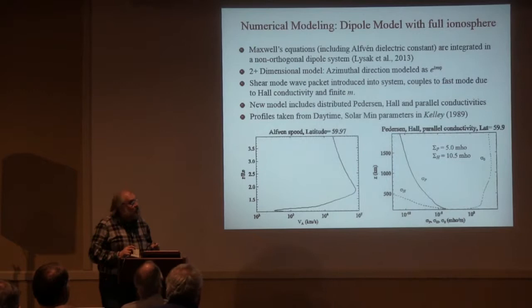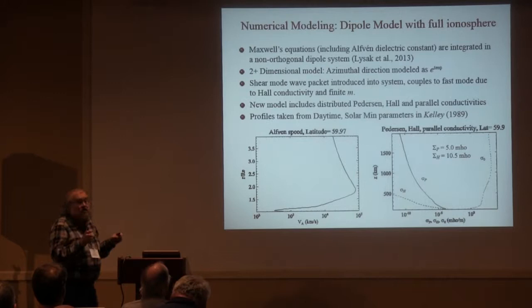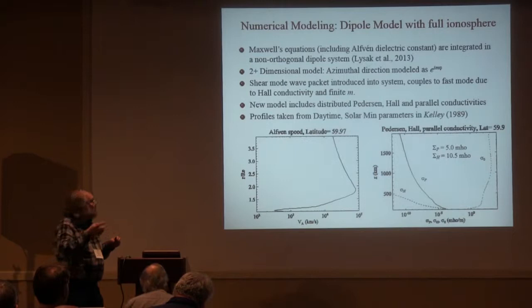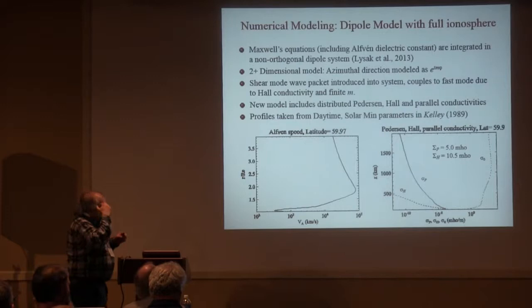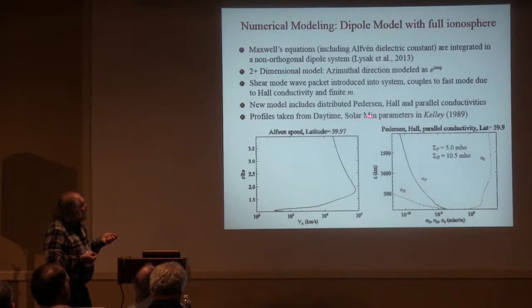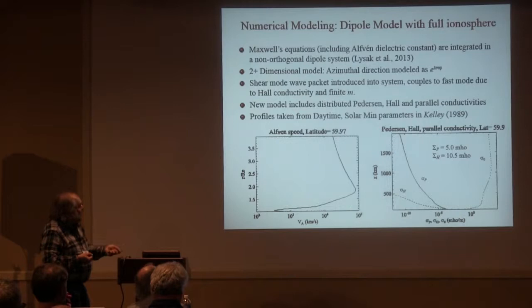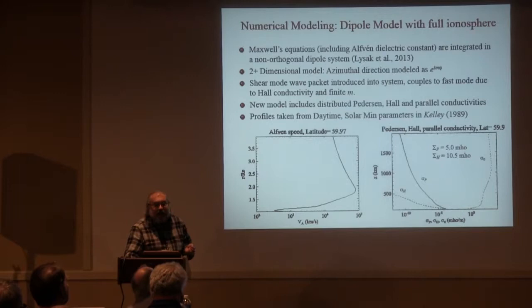Getting to the modeling: our recent model includes a dipole model with a full ionosphere. This is just a linear wave model, so it's nowhere near as sophisticated as global MHD, but we have the advantage that we can go all the way down to the ionosphere and, in principle, all the way down to the ground and model the whole system. In contrast to a lot of previous models, we have distributed Pedersen, Hall, and parallel conductivities within the bulk of the simulation, getting beyond just the sheet ionosphere approximation.